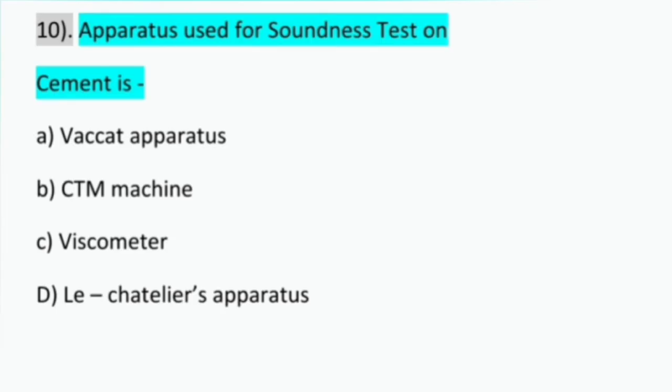Question number ten: the apparatus used for soundness test on cement. Options are: Vicat apparatus - that is used for finding the consistency and initial and final setting time of the cement, not for soundness. B: CTM machine - this is used for the crushing test for coarse aggregate. C: viscosity - this belongs to bitumen, not cement.